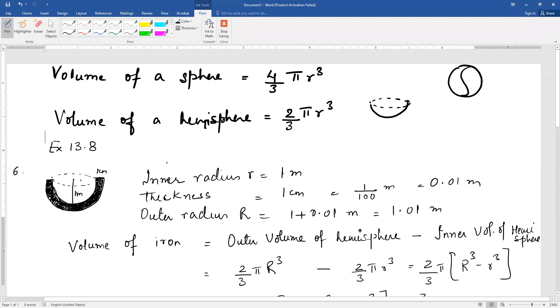You are given that the inner radius of the tank is 1 meter. Since this is 1 cm thick, we have converted the thickness into meters to 0.01 meter. Now the outer radius will be 1 meter plus thickness, that will give you 1.01 meter.